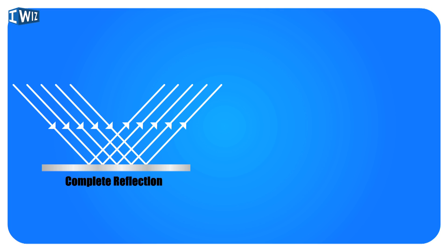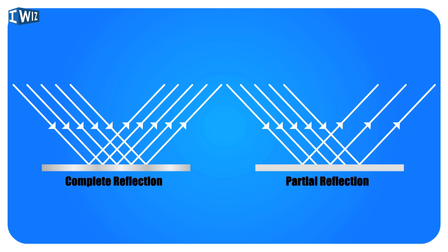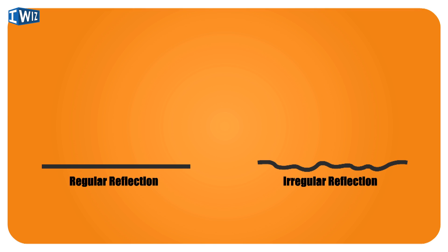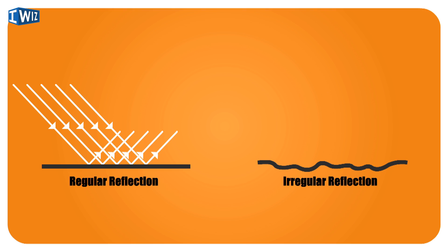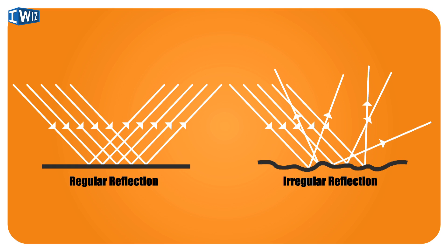In a shiny surface, all the rays of light that hit it are reflected, whereas in a dull surface not all rays are reflected. The most important distinction is between regular reflection and irregular reflection. When light reflects regularly, you can see your image — like a mirror, rays come in at one angle and leave at the same angle, preserving the image. In diffused or irregular reflection, rays bounce off in different directions and you cannot obtain an image.